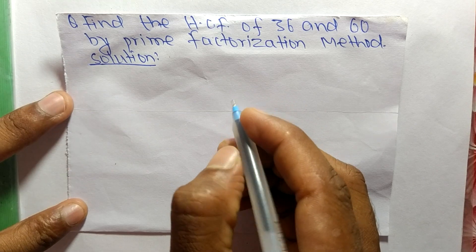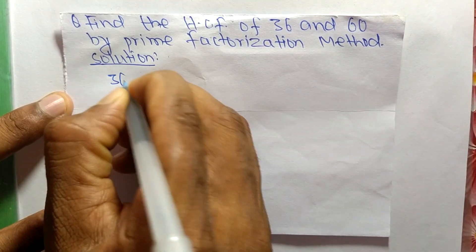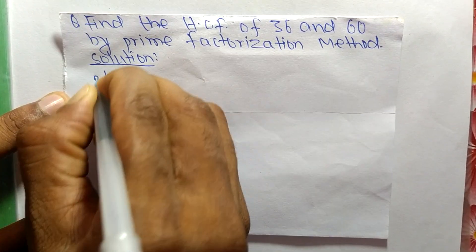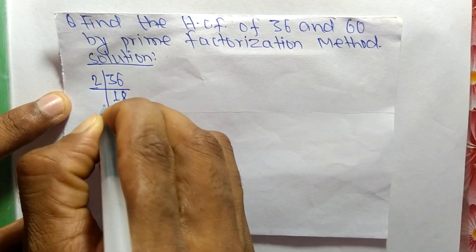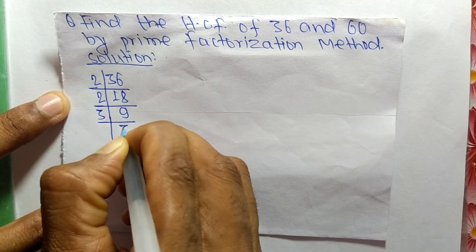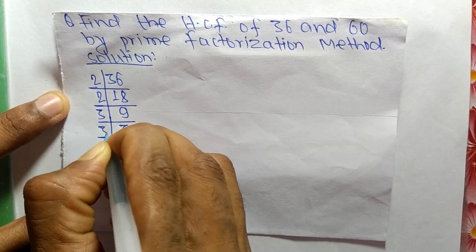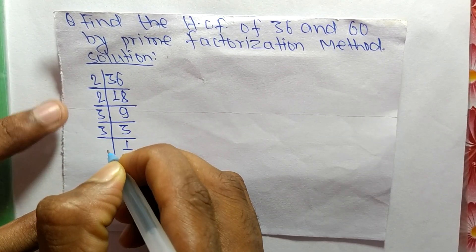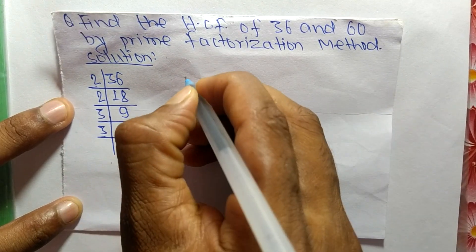First we find out the prime factors of 36. So it is 2 times 18 means 36, 2 times 9 means 18, 3 times 3 means 9, and 3 times 1 means 3.